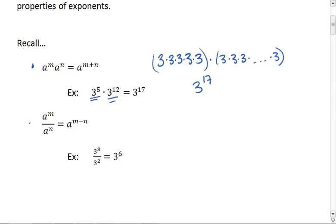We also see that a to the m over a to the n is equal to a to the m minus n. For example, if we have 3 to the 8th, which is repeatedly multiplying by 3 eight times, divided by 3 squared, which is repeatedly multiplying by 3 twice. Those cancel, leaving us with 3 to the 6th.